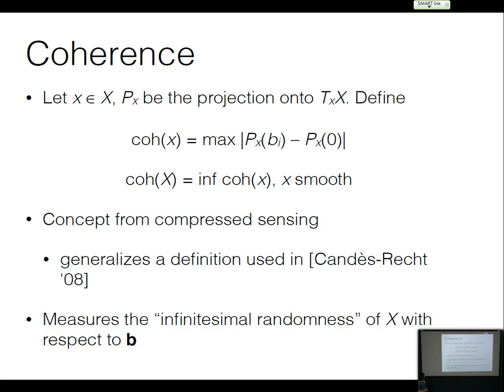This leads to the idea of coherence of a general variety. If I have a smooth point, I can look at the projection operator onto the tangent space at that point, and define coherence as the maximum length of the projection of a basis vector onto that tangent space, taking the infimum over smooth points. This is not a concept we invented — it comes from compressed sensing. In a paper about low-rank matrix completion, Candès and Recht used more or less this concept specialized to their setting. You can think of it as measuring the infinitesimal randomness of X with respect to the basis.